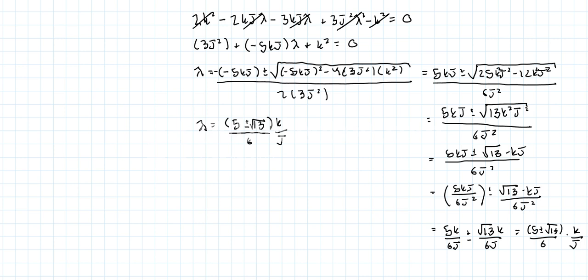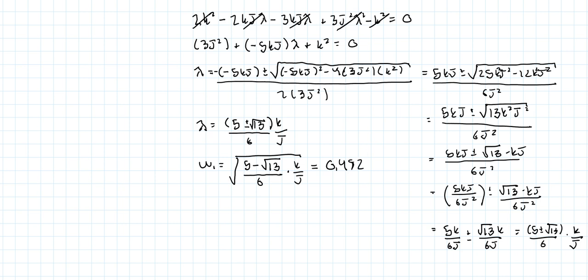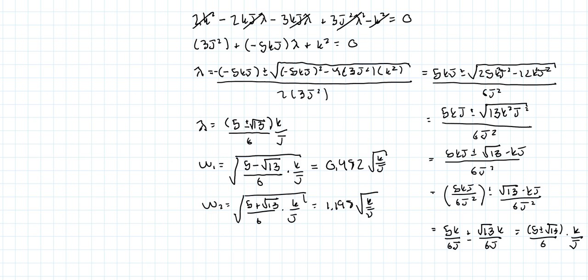So λ = (5 ± √13)/6 · (K/J). The first natural frequency is ω₁ = √[(5 - √13)/6 · (K/J)] = 0.482√(K/J), and the second natural frequency is ω₂ = √[(5 + √13)/6 · (K/J)] = 1.198√(K/J). That is our answer.